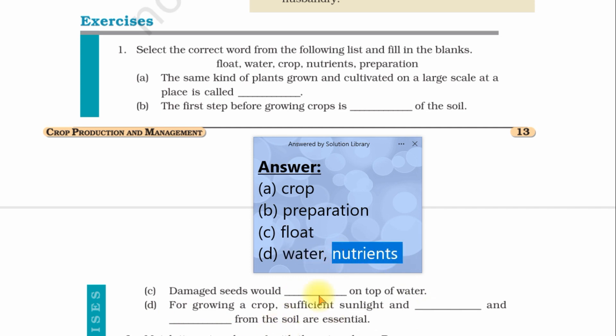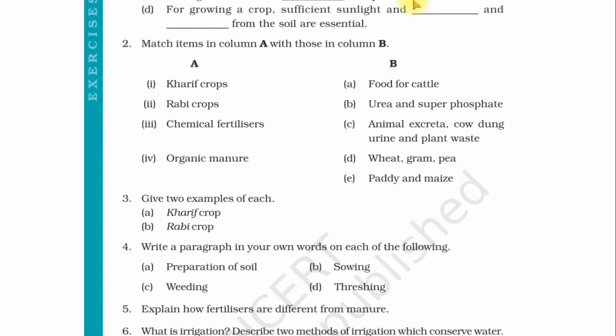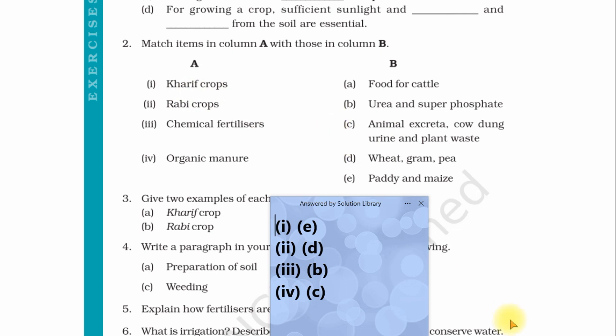Question number two: Match items in column A with those in column B. Column A is given here and column B is given here. Kharif crop matches with E option, paddy and maize. Rabi crop matches with D option, wheat, gram, and pea. Chemical fertilizer matches with urea and super phosphate. Organic manure matches with animal excreta, cow dung, urine, and plant waste.